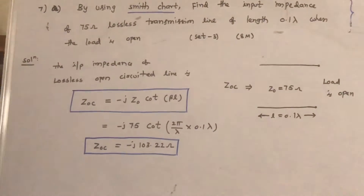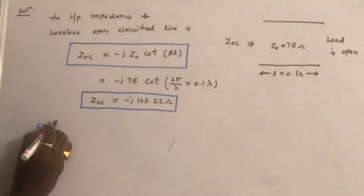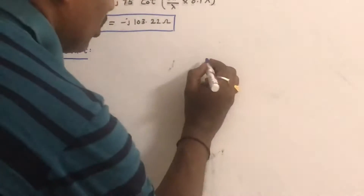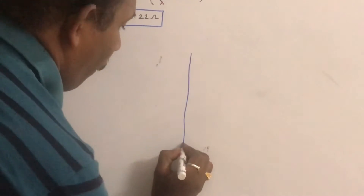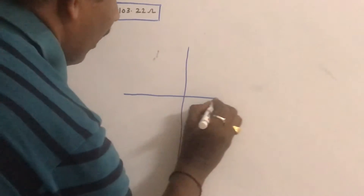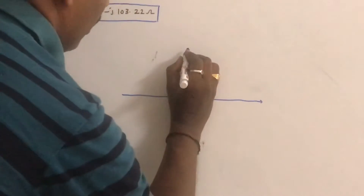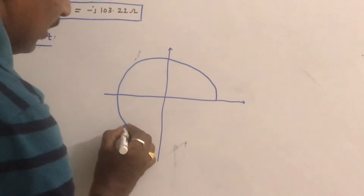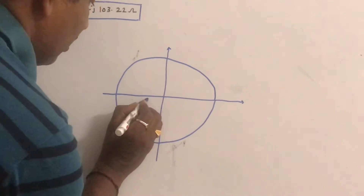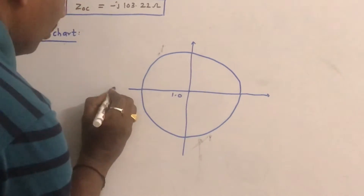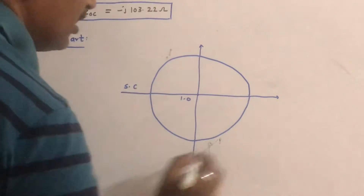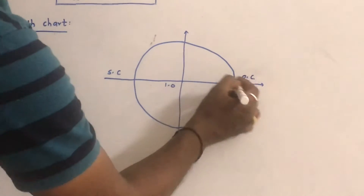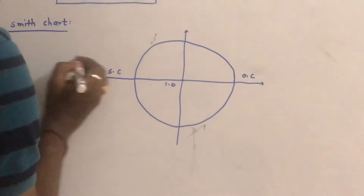Now let us check by using the Smith chart whether the same answer will come out. I am approximately drawing the Smith chart to understand the concept. This is the circle; this is the 1.0 point. This is called the short circuited end in the Smith chart, and this is called the open circuited end, where the circles are grouped together.